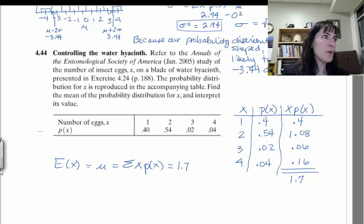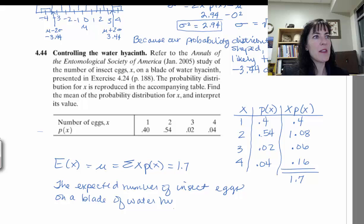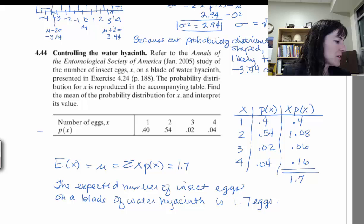We want to talk about the expected value in terms of the problem. The expected number of insect eggs on a blade of water hyacinth is 1.7 eggs. So that's how you interpret the expected value. It's what you expect to find when you look. It's also the mean number of eggs on a leaf.